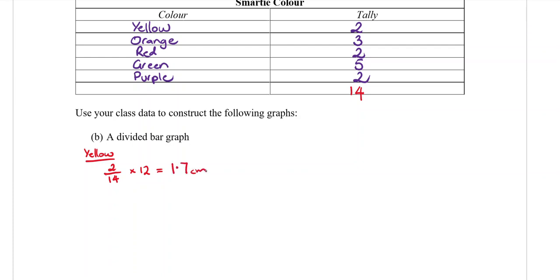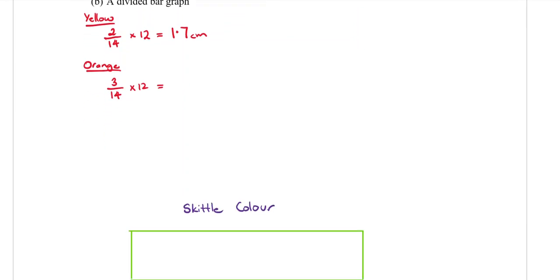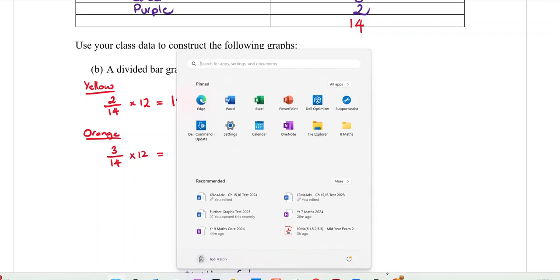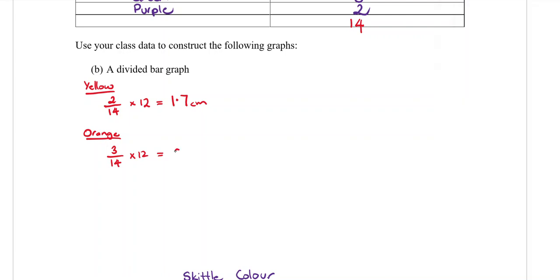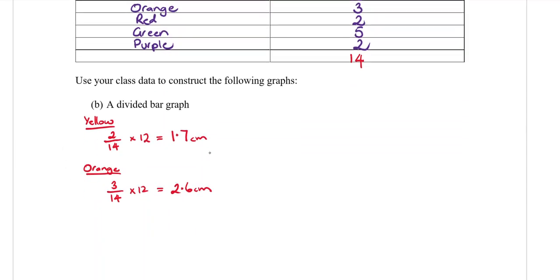That's centimeters. Go on to orange. Orange, there were 3 out of 14 were orange. Times that by 12. Type it in your calculator. 2.6. Remember one decimal place, round to one decimal place.